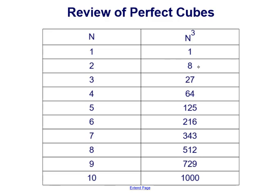And again, we found those numbers by taking the number n and cubing it. We're multiplying that number by itself three times.